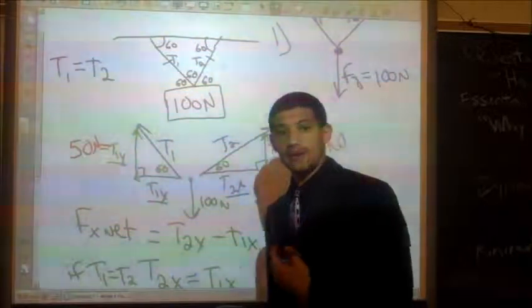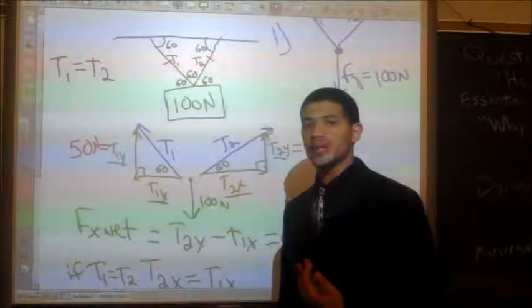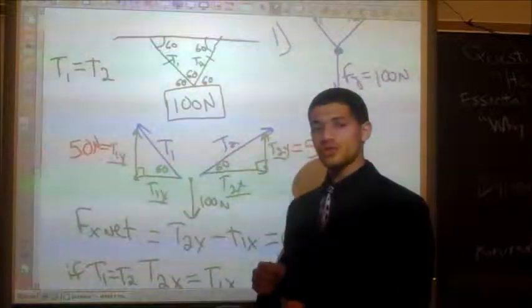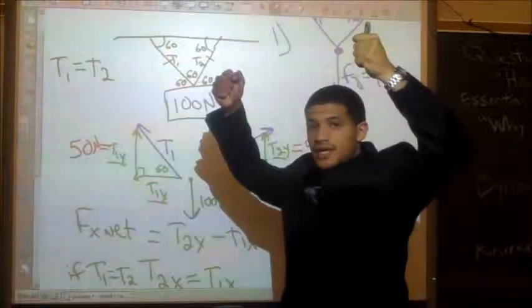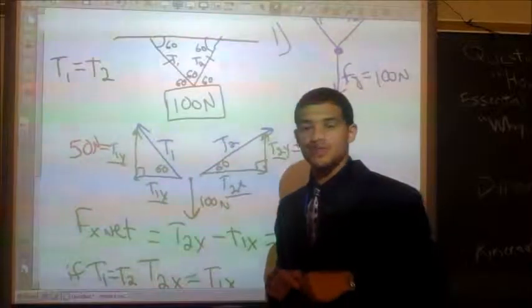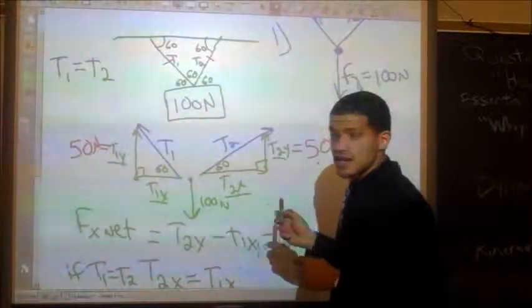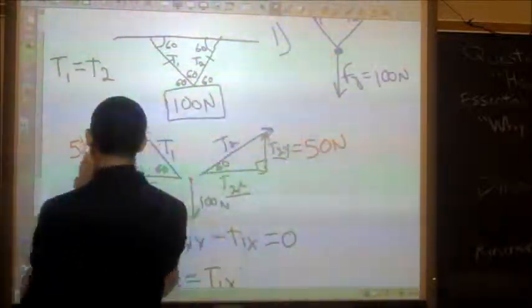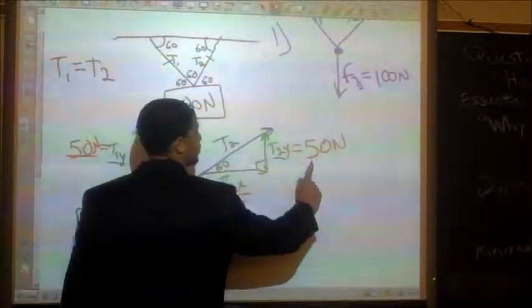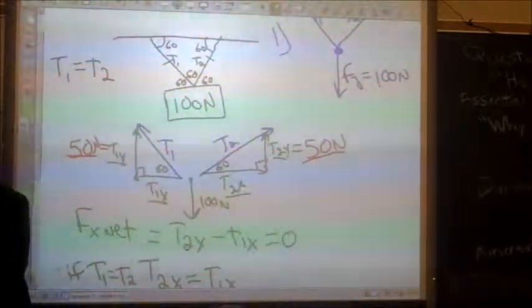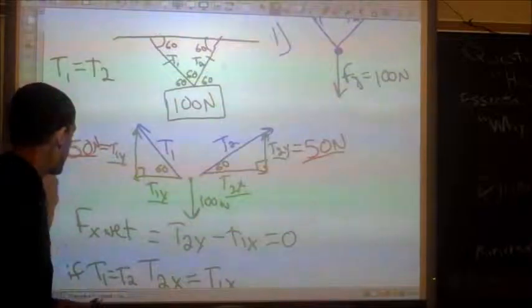Although we proved it through math, we can also think conceptually. If I have 100 newton force going down, and I have 2 ropes pulling it up, they have to distribute that force equally. And in this case, that makes sense because both of them are 50 newtons. So our math agrees with our concepts and how we think.